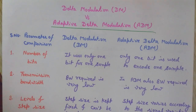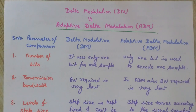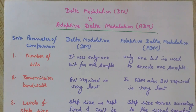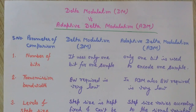If the difference is negative, we reduce the approximated signal by Delta, that is by one step. When the step size is reduced we transmit zero, and if the step size is increased then one is transmitted. Only one binary bit is transmitted per sample, but due to the fixed step size there are disadvantages of Delta modulation: slope overload distortion and granular or idle noise.